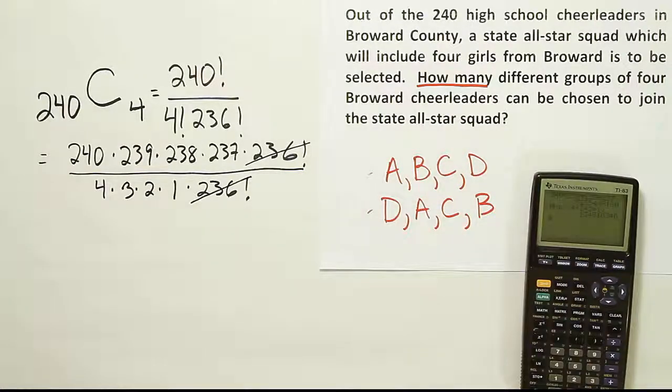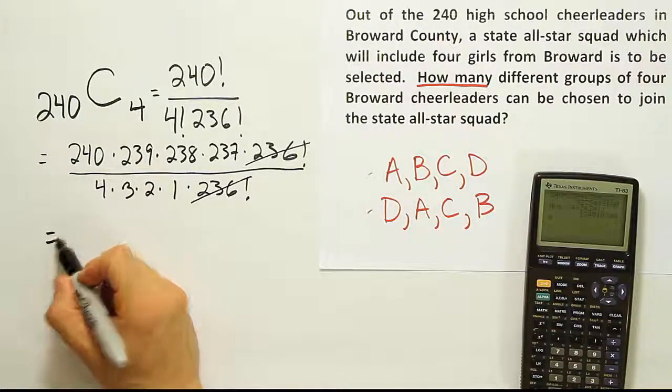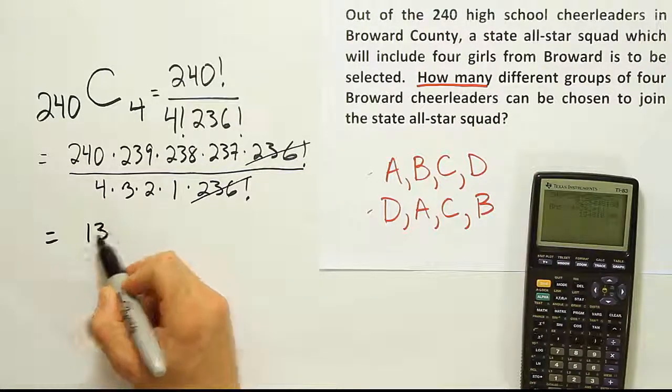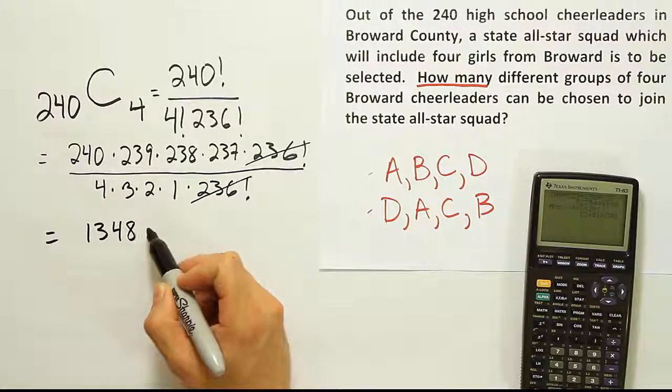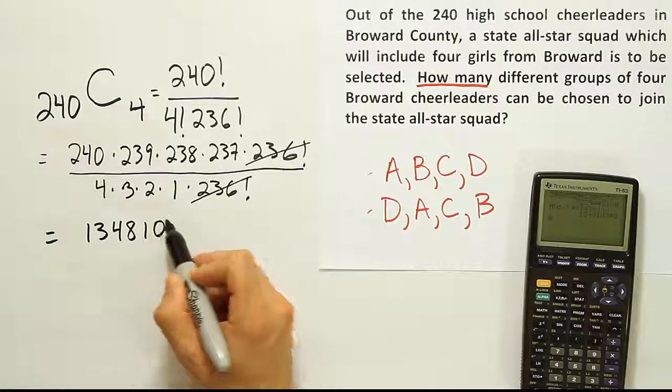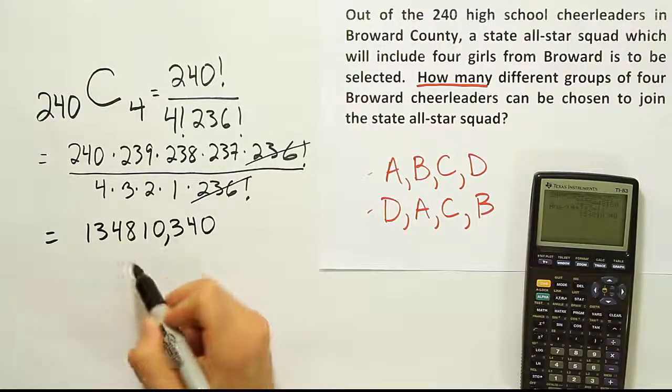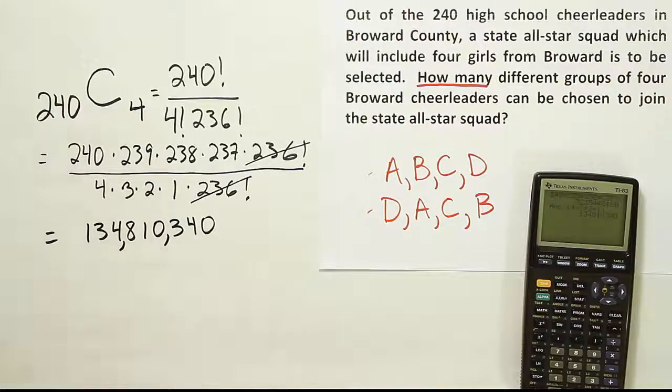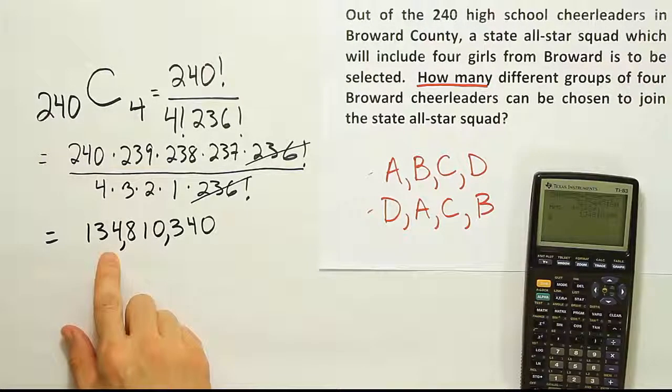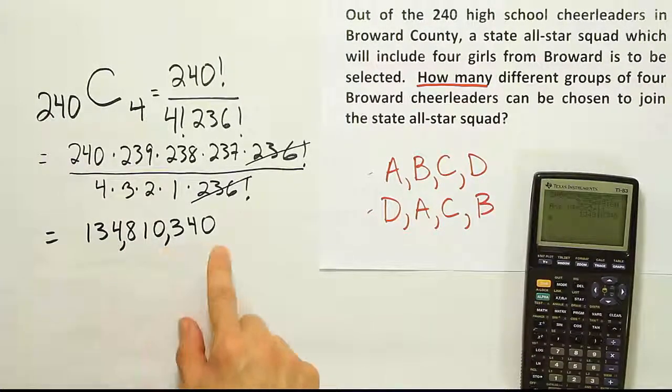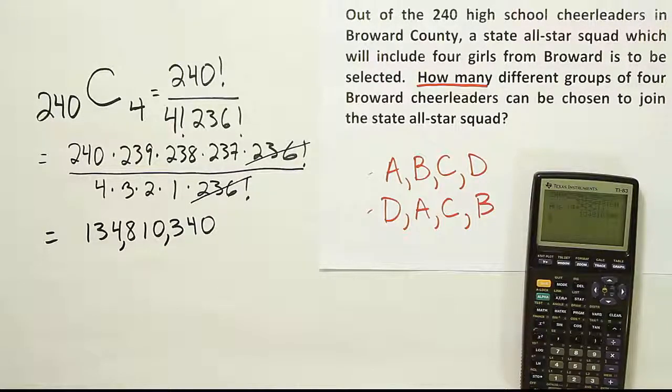And when we're finished, we get this very large number. But here's the solution. It ends up being 1, 3, 4, 8, 1, 0, 3, 4, 0. So that's essentially 134,810,340 different possible groups of 4 you can choose from 240 cheerleaders. And that's it.